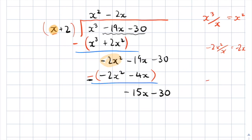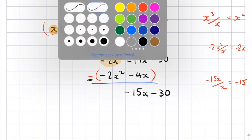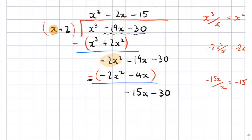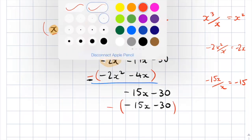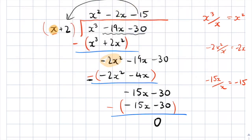For the last step, negative 15x divided by x gives negative 15, which goes at the top. Multiplying negative 15 by x plus 2 gives negative 15x minus 30. Subtracting gives zero remainder, as expected. So we can now write that x cubed minus 19x minus 30 equals x plus 2 times x squared minus 2x minus 15.